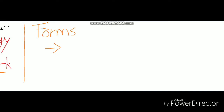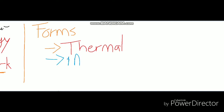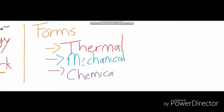The first form we're going to look at is thermal energy — anything that gives off or uses heat uses thermal energy. The second is mechanical energy — something with moving parts, things that do work using moving parts. Next is chemical energy, which is when particles react with each other or change in a certain way, releasing chemical energy.